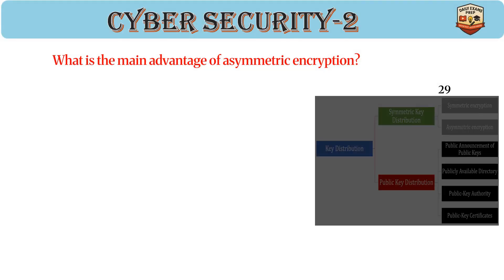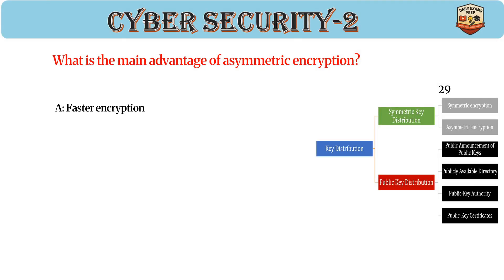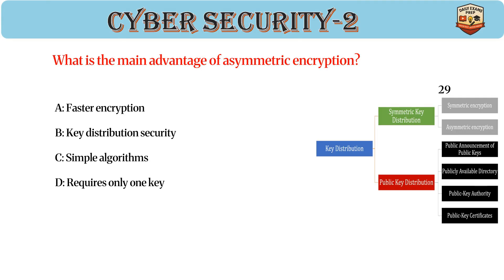What is the main advantage of asymmetric encryption? Answer: B. Key distribution security. Asymmetric encryption uses two keys: public and private. Solves the key distribution problem. Common algorithms: RSA, ECC.